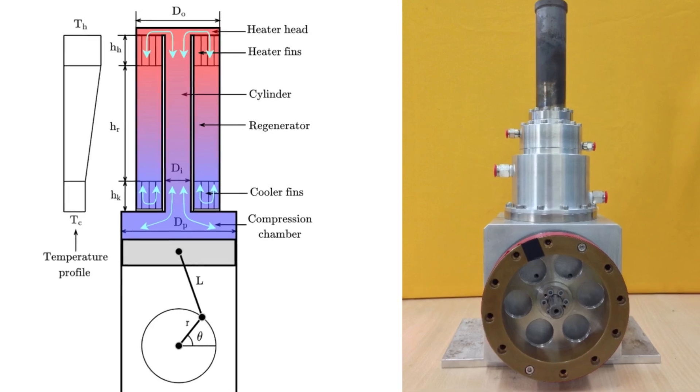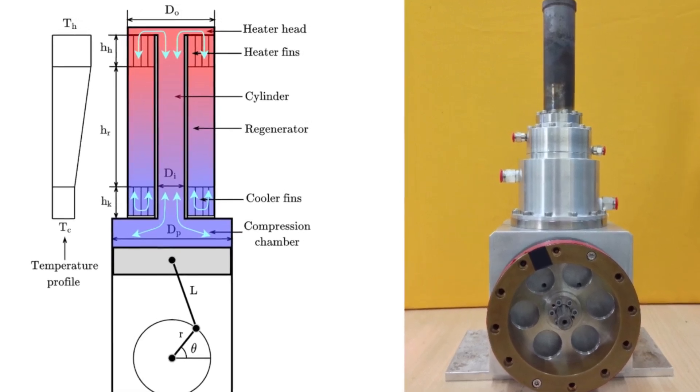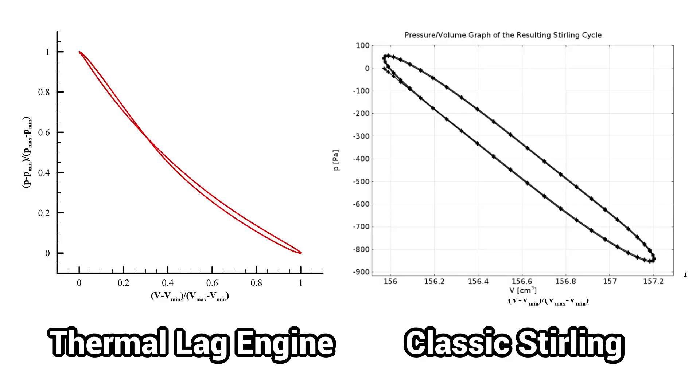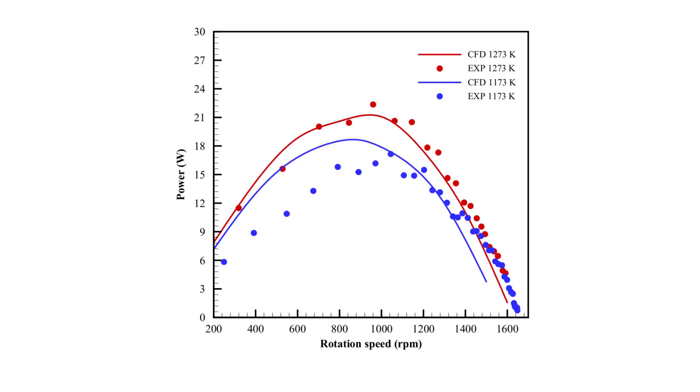To improve engine performance, the driving phenomena needs to be fully understood. Numerical models have shown that the pressure-volume diagram is much narrower than that of a traditional Stirling engine. The TLE thus has relatively poor efficiency and thermodynamic performance.